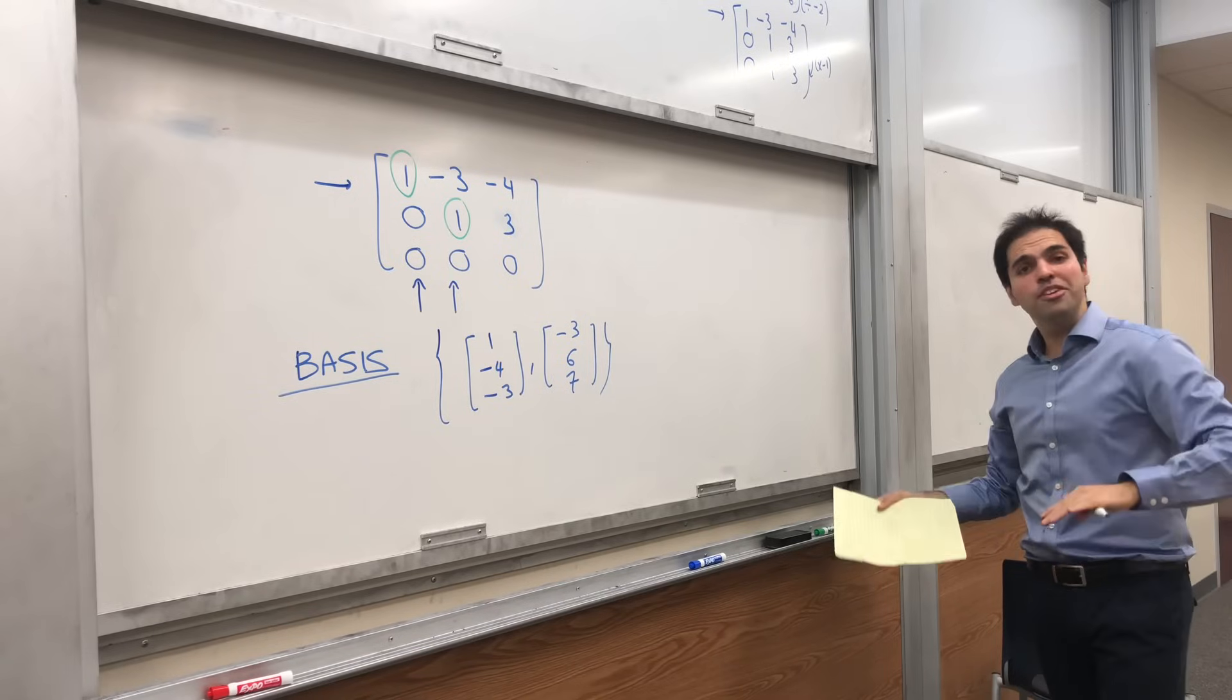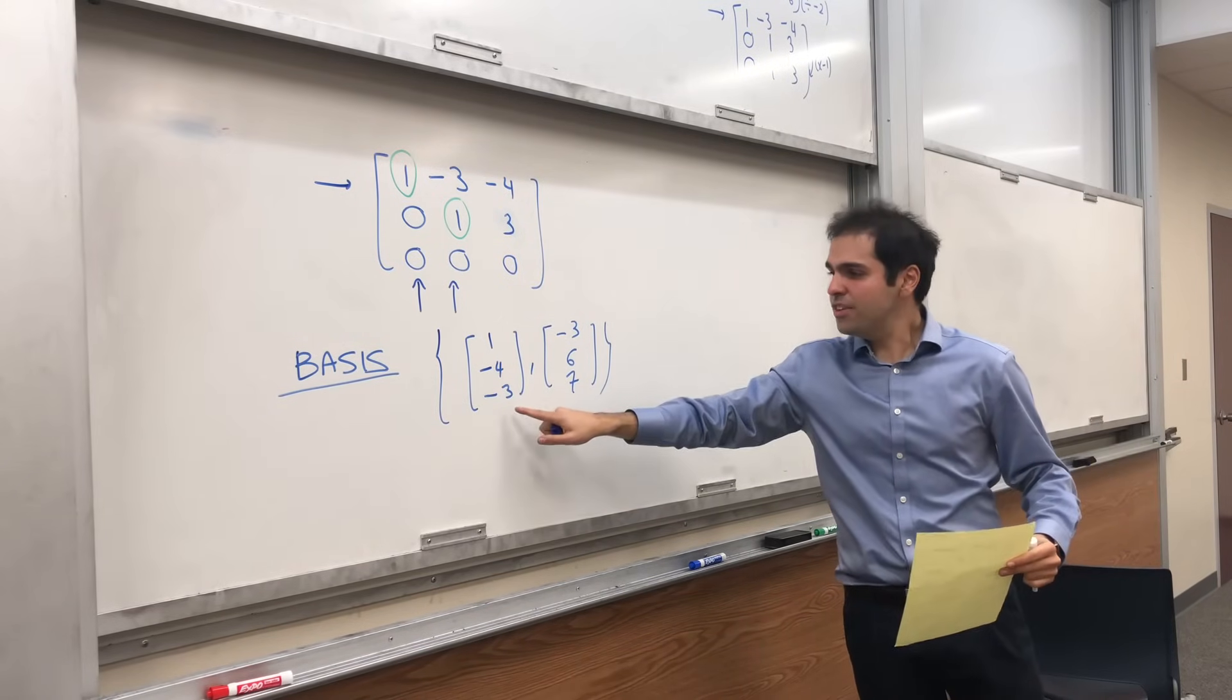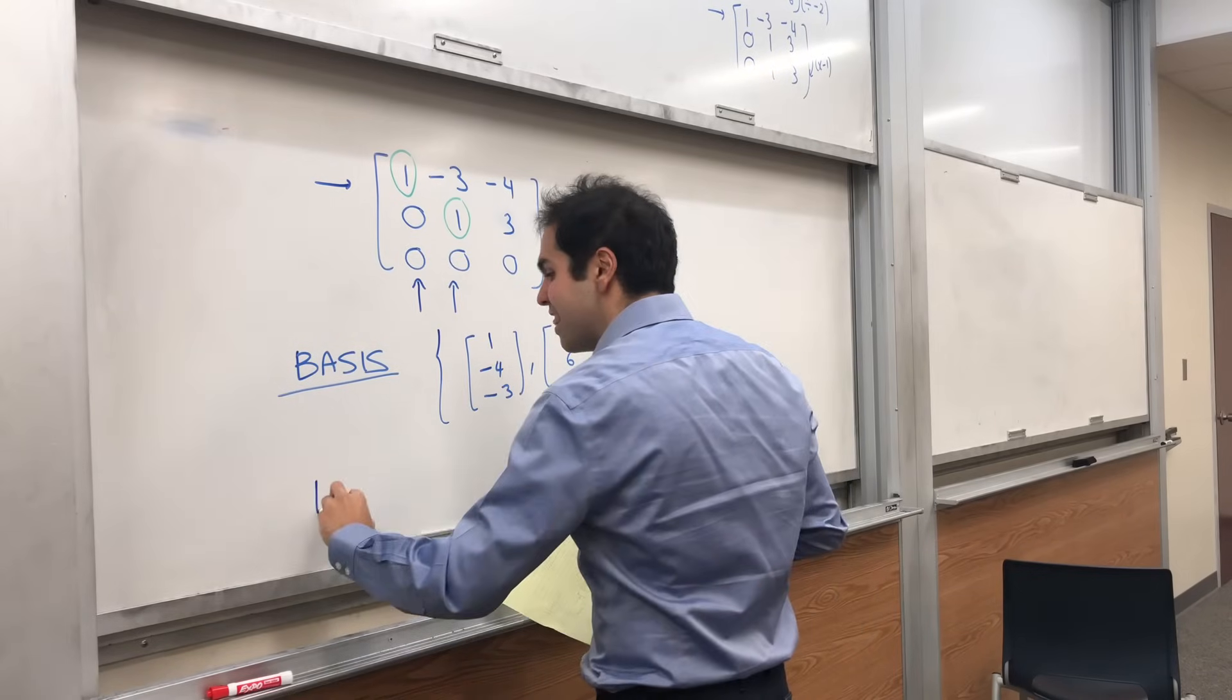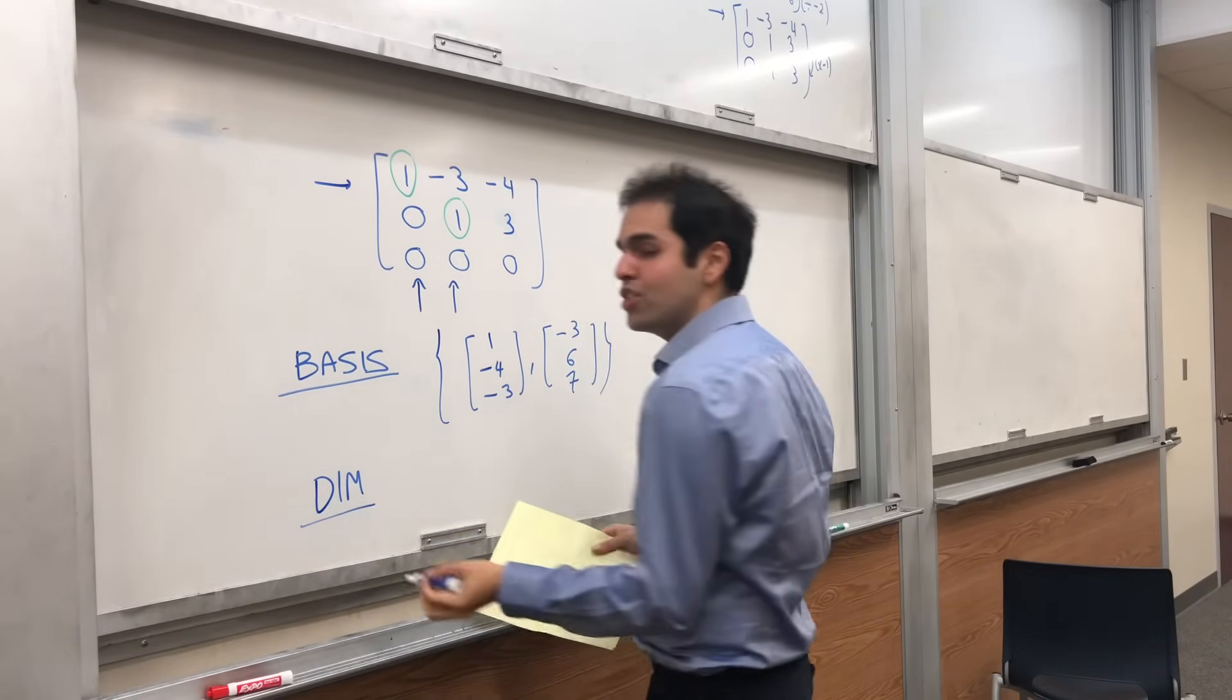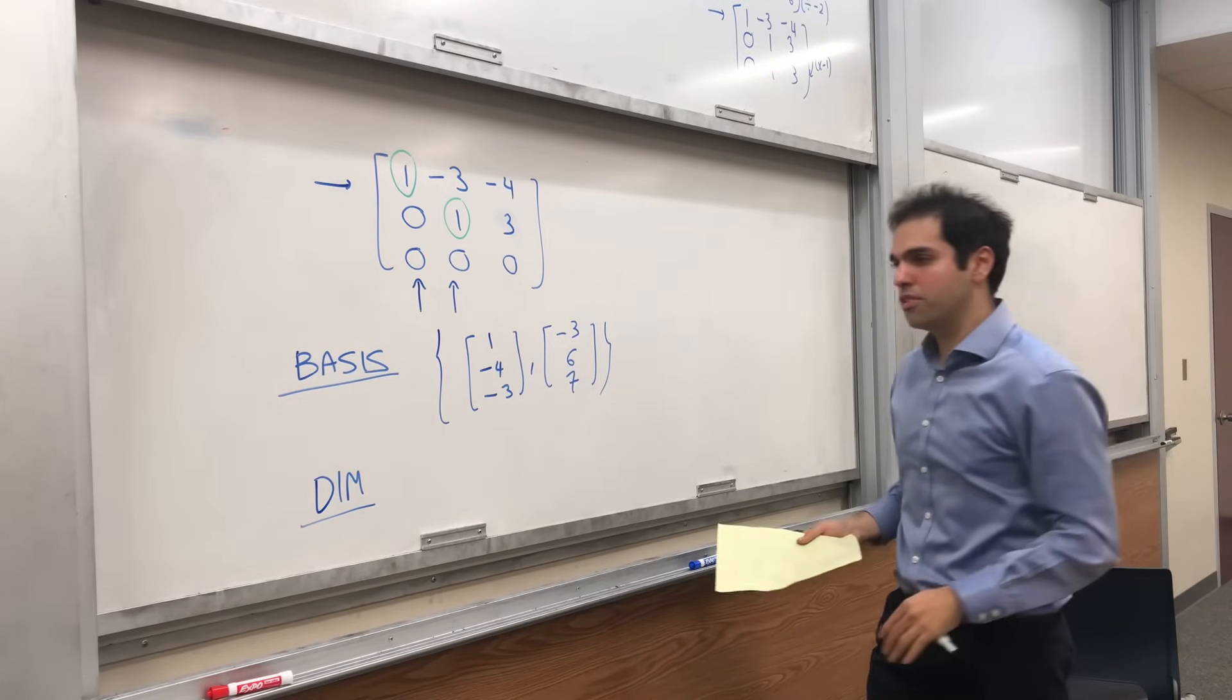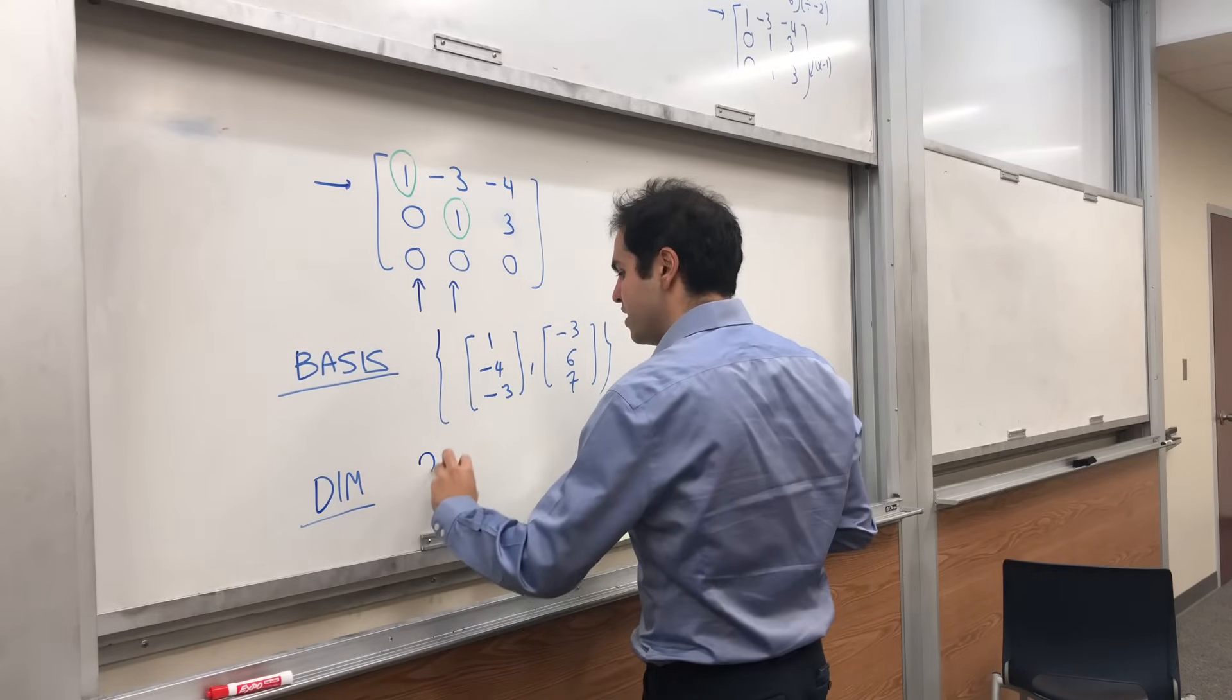And then, how do you find a dimension? Very easy. You just count the number of vectors in the basis, because that is literally the definition of dimension: the number of vectors in any basis for your subspace. Dimension is then 2.